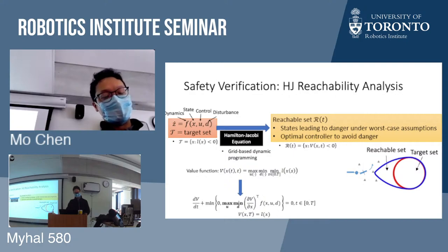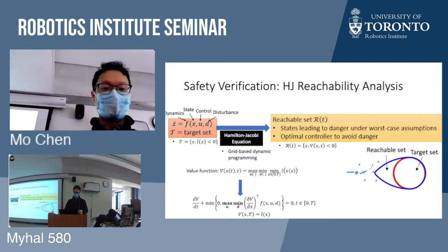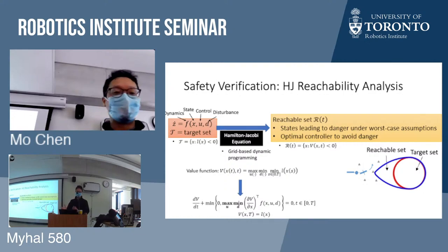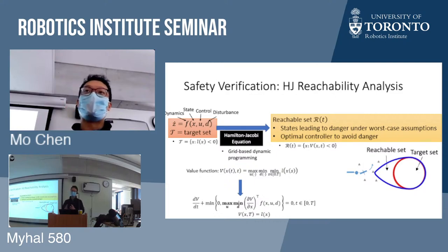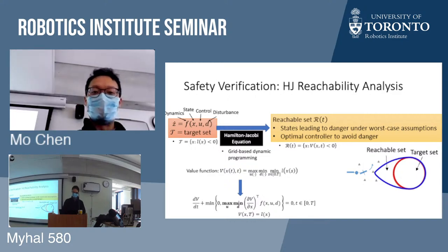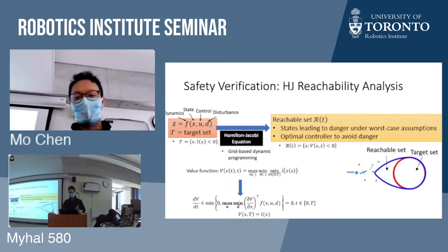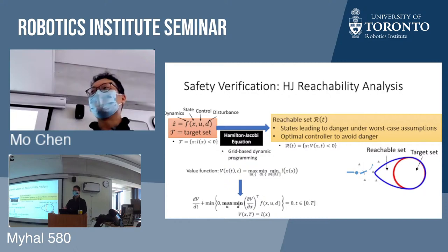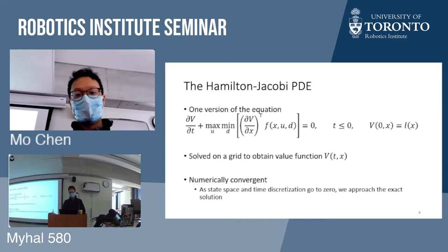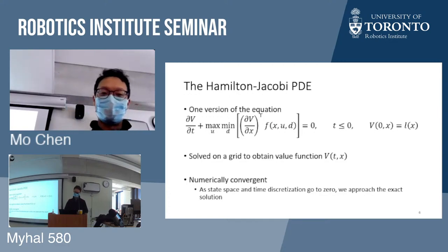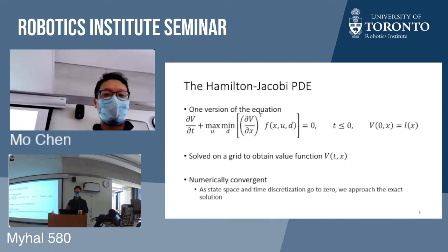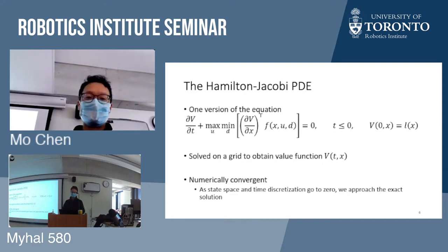In terms of mathematical details: we represent sets implicitly using the sub-zero level set of functions. Once we solve the Hamilton-Jacobi equation, we obtain a value function. The zero sub-level set of the value function represents the reachable set. The key insight is we solve an equation on a grid to go from the target set L to the reachable set B. Solving on a grid has benefits: we can account for disturbances, nonlinear dynamics is easy to handle via dynamic programming, and we can represent sets of any shape using implicit representations.